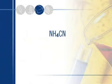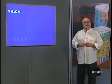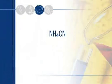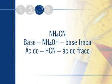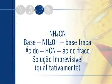Último exemplo: NH₄CN. Base de origem: amônia, NH₃ — base fraca. Ácido de origem: HCN, ácido cianídrico — ácido também fraco. Vai haver hidrólise? Vai. Se formam uma base fraca, a amônia, e um ácido fraco, o HCN. Quem predomina? Não sei. Qualitativamente, a situação é absolutamente imprevisível. Não sei dizer se o meio é ácido, básico ou neutro.